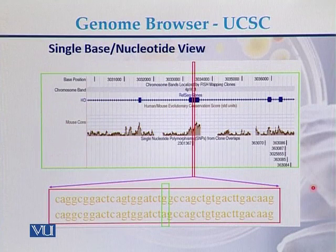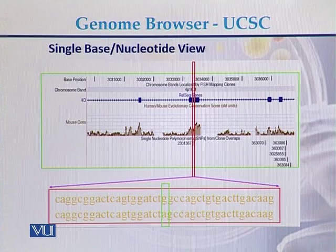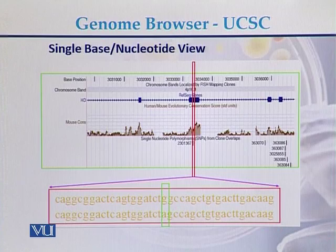If we want to see just a single base or a single nucleotide, that can also be viewed with the help of the UCSC genome browser. Here we can see the detailed DNA sequence, and we can zoom in to see just one nucleotide.